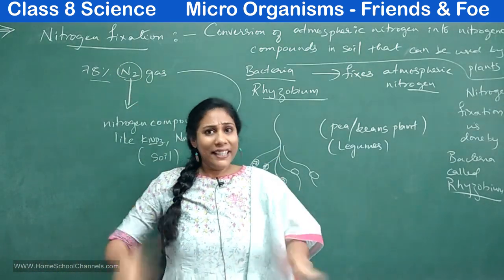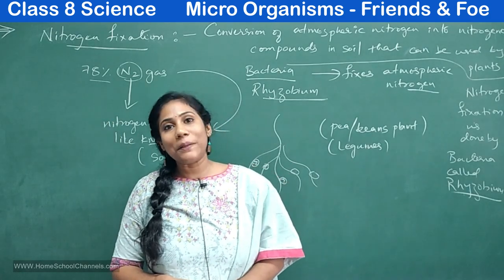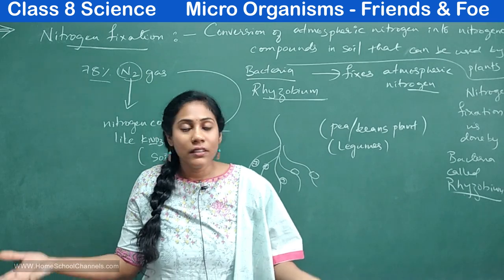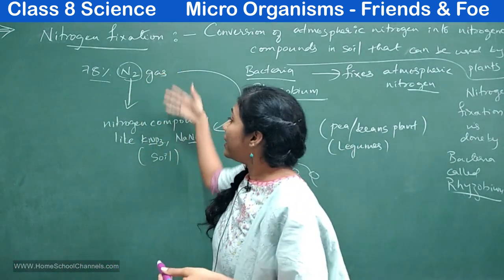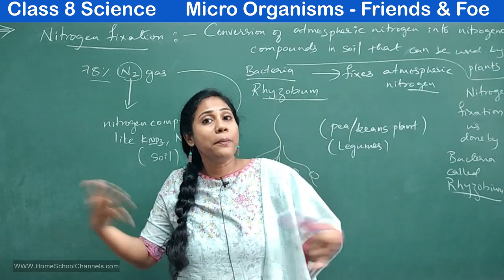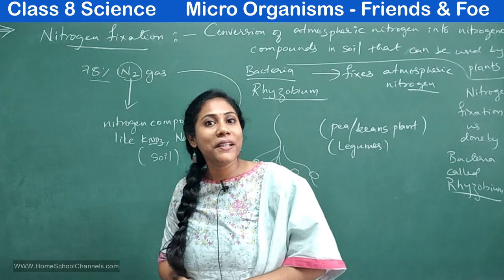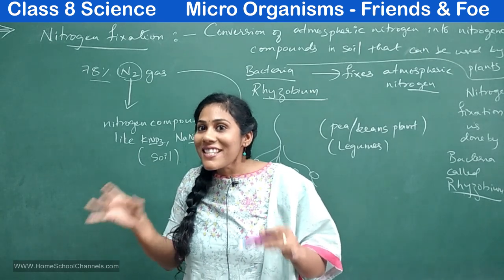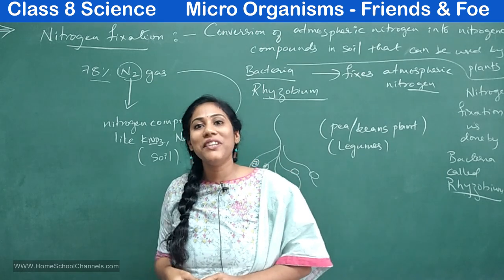Every time you measure the percentage of nitrogen in the atmosphere, it is 78% only — it's not increasing or decreasing. How does the amount of nitrogen remain constant in the atmosphere? The bacteria is converting atmospheric nitrogen into other substances, yet the percentage stays at 78%.